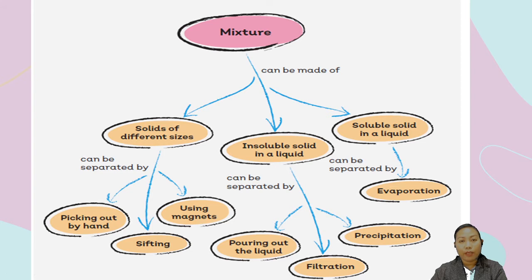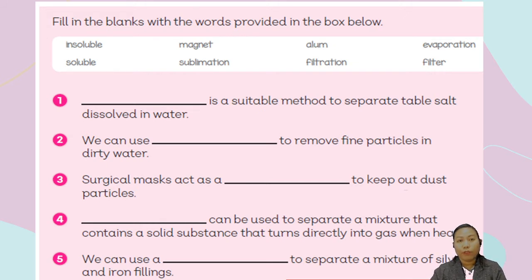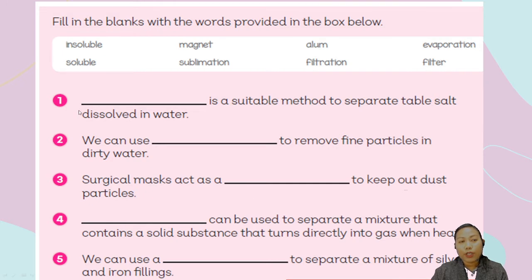Before we move on, let us first have some exercises. Please get your book and open it to page 42. Number one: blank is a suitable method to separate table salt dissolved in water. What technique or what method are you going to use?